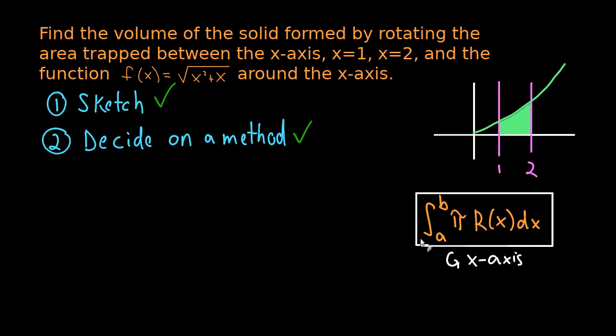Time to move on to step three. Step three is find a and b. In the disk method we have these bounds of integration and we need to figure out what they are. For the disk method, those bounds are just the leftmost and rightmost point of the area, which in our case is very easy. It's just x equals 1 and x equals 2.